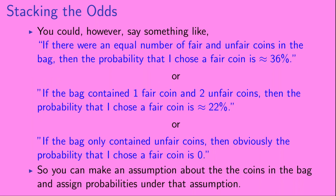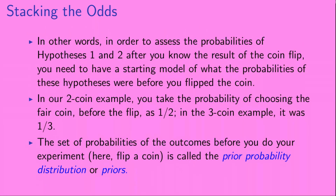This means that if I ask you to assign probabilities to hypotheses one and two, but you have no idea what I put in the bag, you actually can't answer the question. You could, however, say something like: if there were an equal number of fair and unfair coins in the bag, the probability that you chose a fair coin is about 36%. Or if the bag contained one fair and two unfair coins, it's about 22%. Or if the bag contained only unfair coins, the probability is zero. So you can make an assumption about the coins in the bag and assign probabilities under that assumption. In other words, to assess the probabilities after you know the result of the coin flip, you need a starting model of what the probabilities were before you flip the coin.